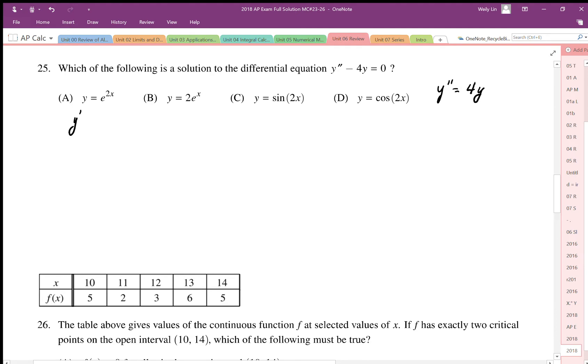So if I differentiate the first one, I get 2e to the 2x. The second derivative then is 4e to the 2x. And if we look at how we define the original y, this is where the second derivative is equal to 4 times the original y. So the answer is A.